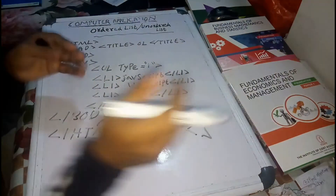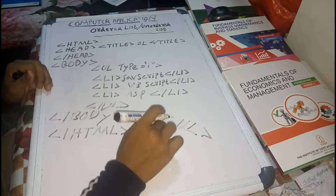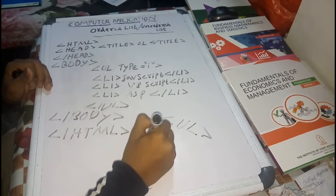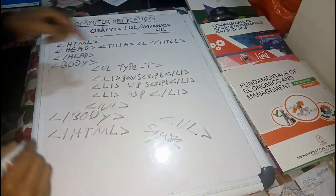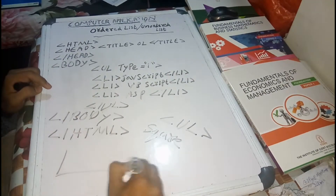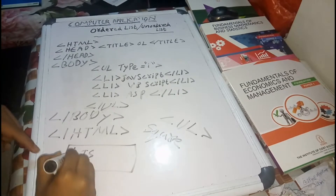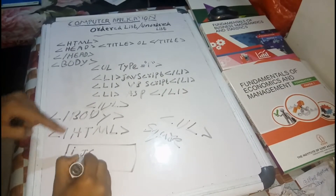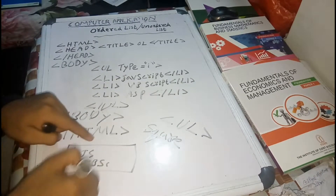Now you can use the unordered list. You can use the star, and you can use the square. The square is the list style. If you use the output page you can use the ordered list. The names shown are JavaScript, VBScript — that is the ordered answer.